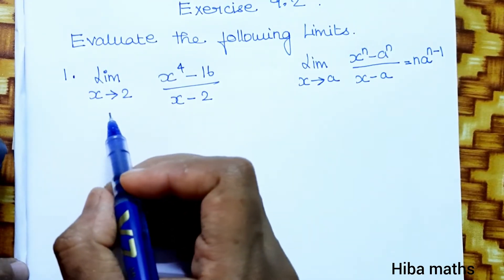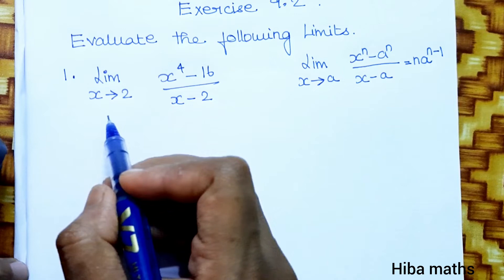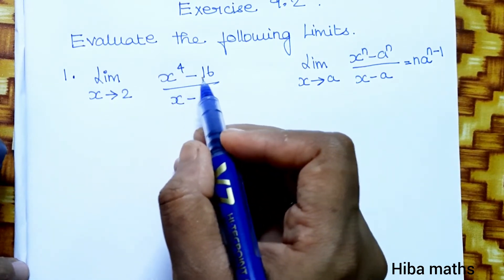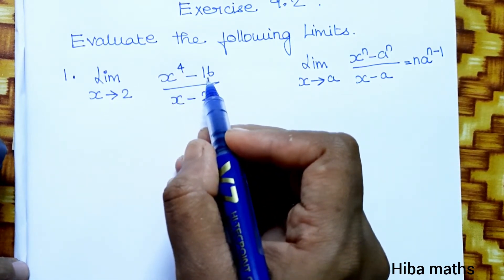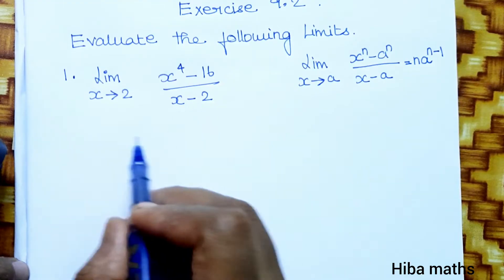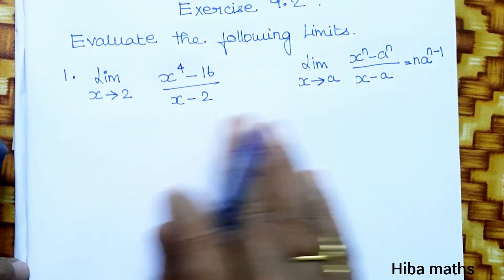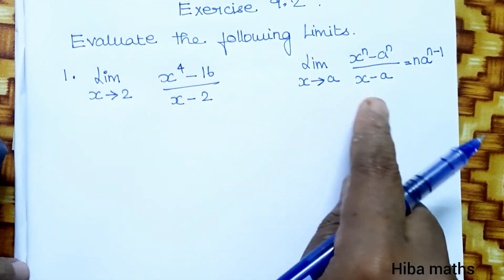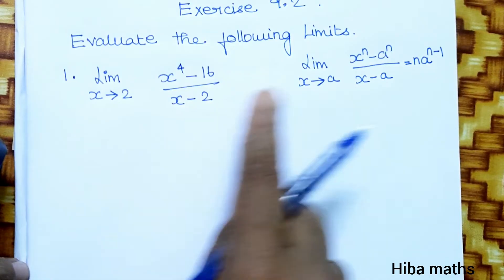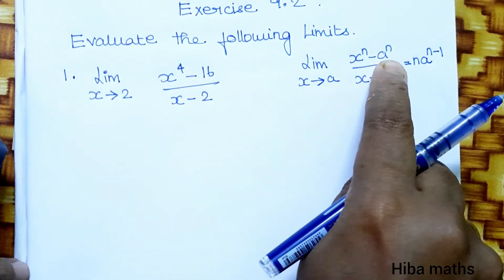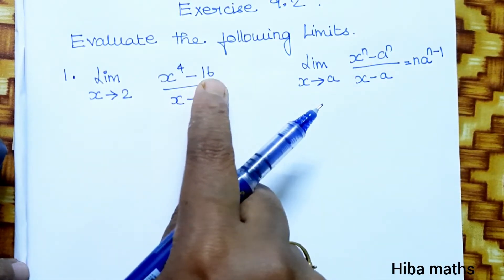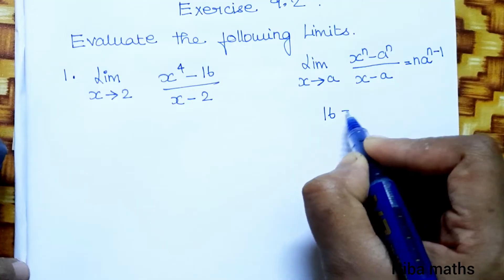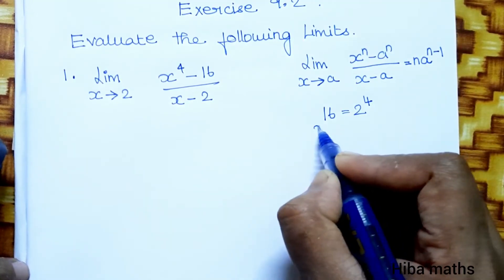First question: limit x tends to 2, x power 4 minus 16, divided by x minus 2. Let's compare — the value 2 appears in the first part, and 16 in the second part. We can recognize that 16 equals 2 power 4.